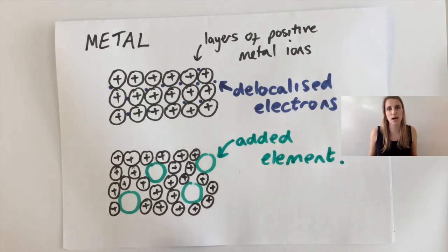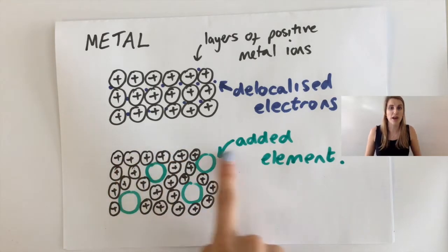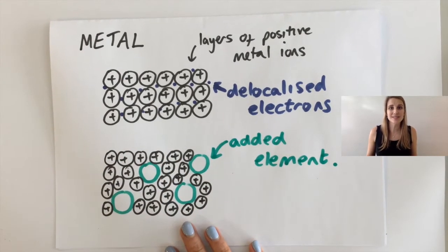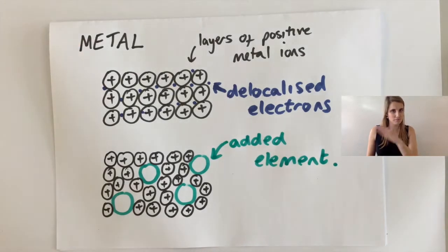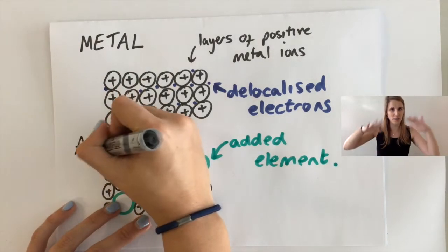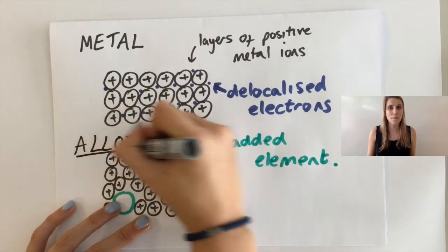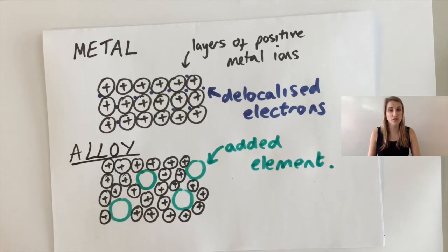It might be another metal, it might be carbon or anything else. So what you can see now is that the layers aren't arranged in straight lines anymore, it's all a bit up and down, and that means that they can't slide over each other like they could do before.